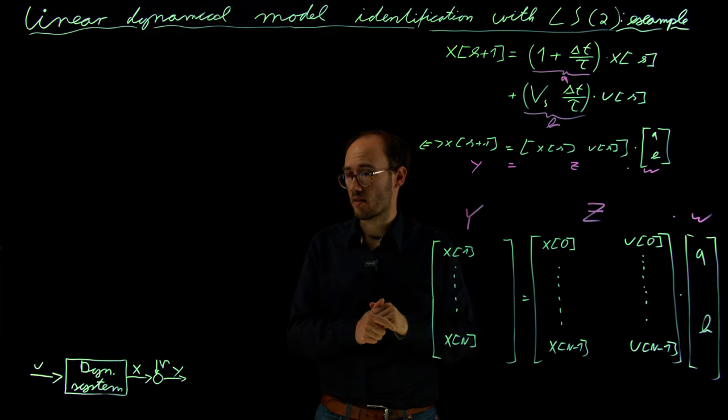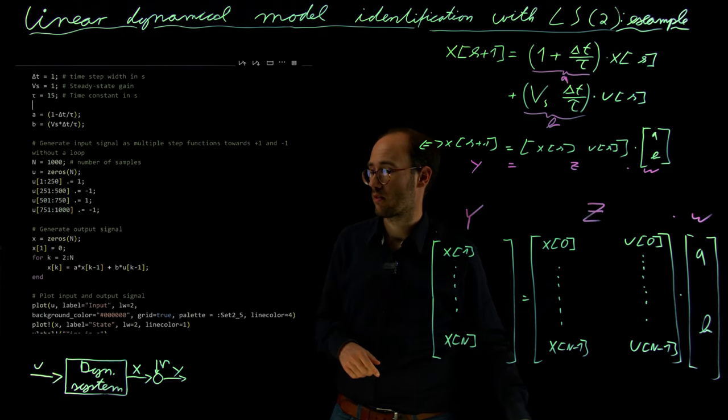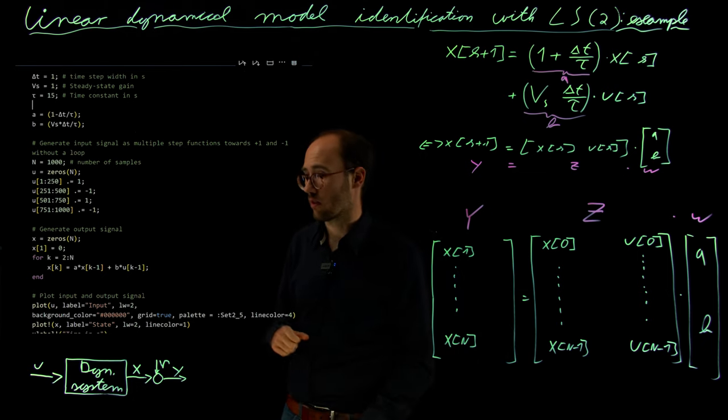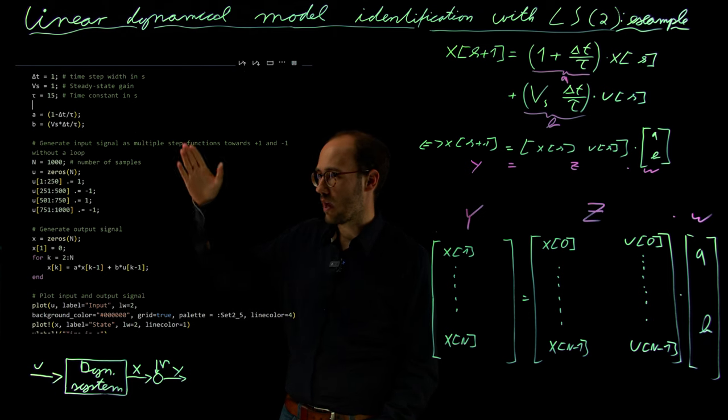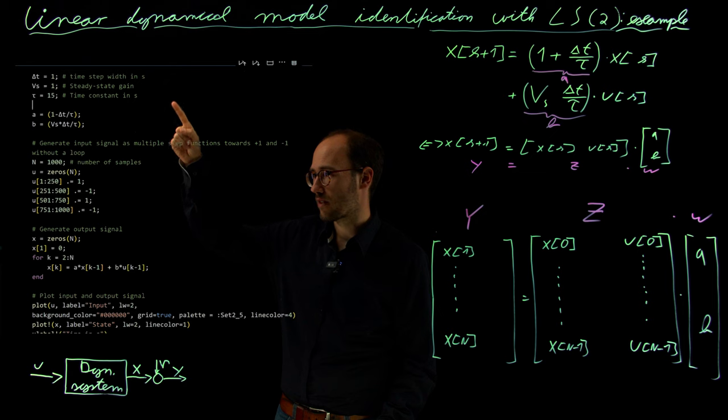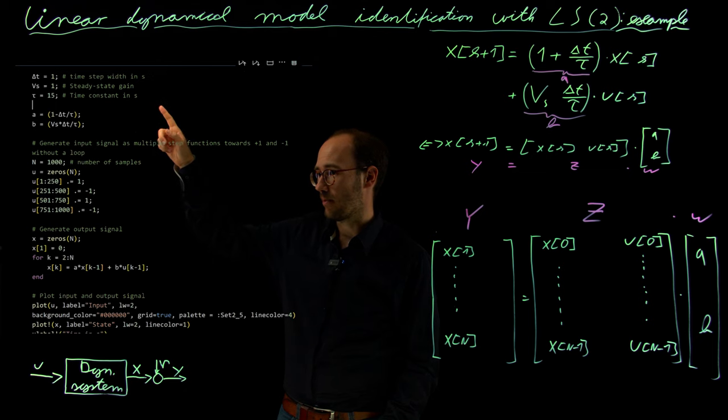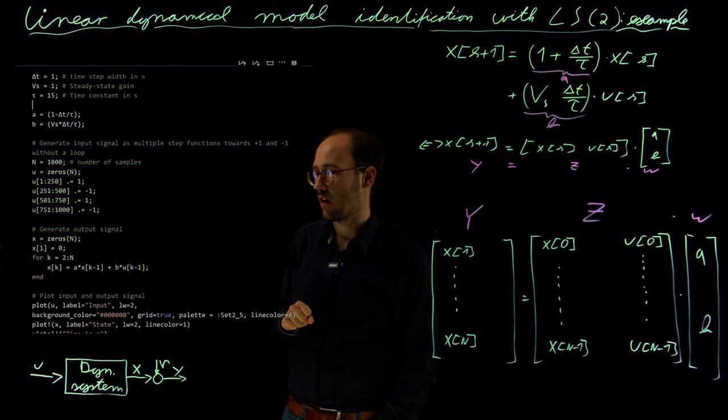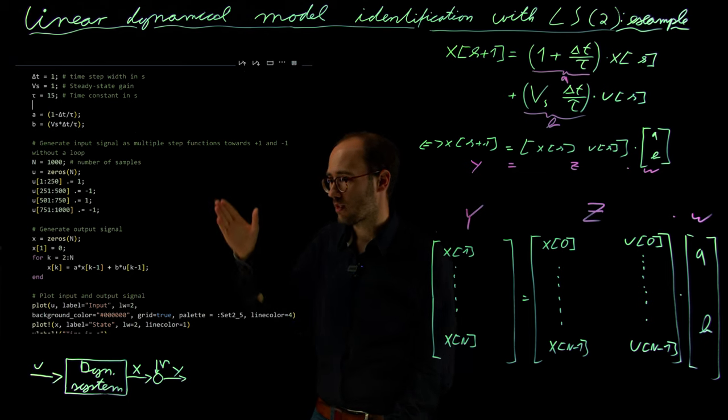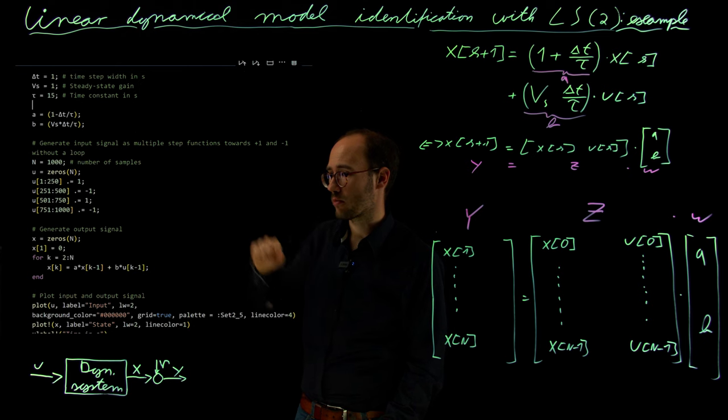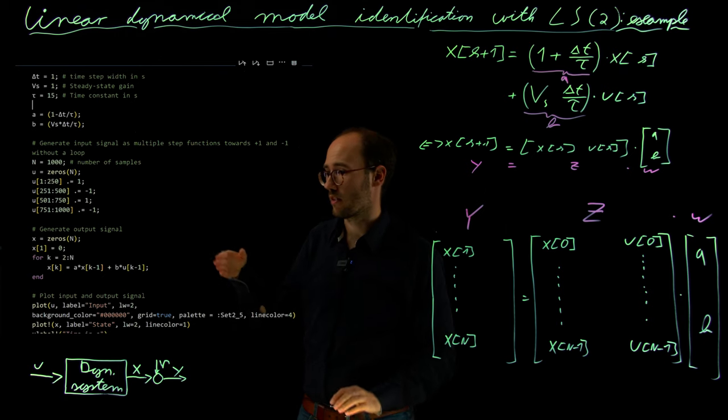So that's our problem. And now let's go through some Julia code, where we basically want to see how we can utilize our least squares, ordinary least squares solution, in order to solve the problem. In order to do so, we have defined here just the parameters quite quickly. So Vs, our steady state gain, is just the unit gain. And as a time constant tau, we assume just 15, which is just an arbitrary number. So what we do here is we first generate some data for step-like change inputs. So the input u is basically jumping around between 1 and minus 1.